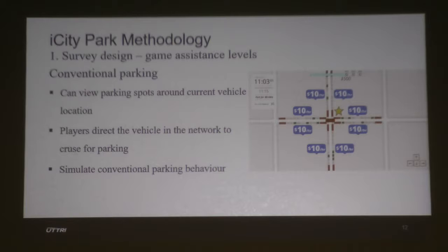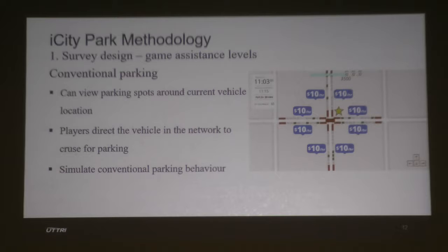There are two parking assistance level designs. The first is called conventional parking: drivers can only see parking information around their current vehicle location within a limited distance, so they must cruise around the network near the destination to gather parking information. After processing that information, they make their parking choices. This represents conventional parking behavior where you cruise to see which spots are available and their parking rates.